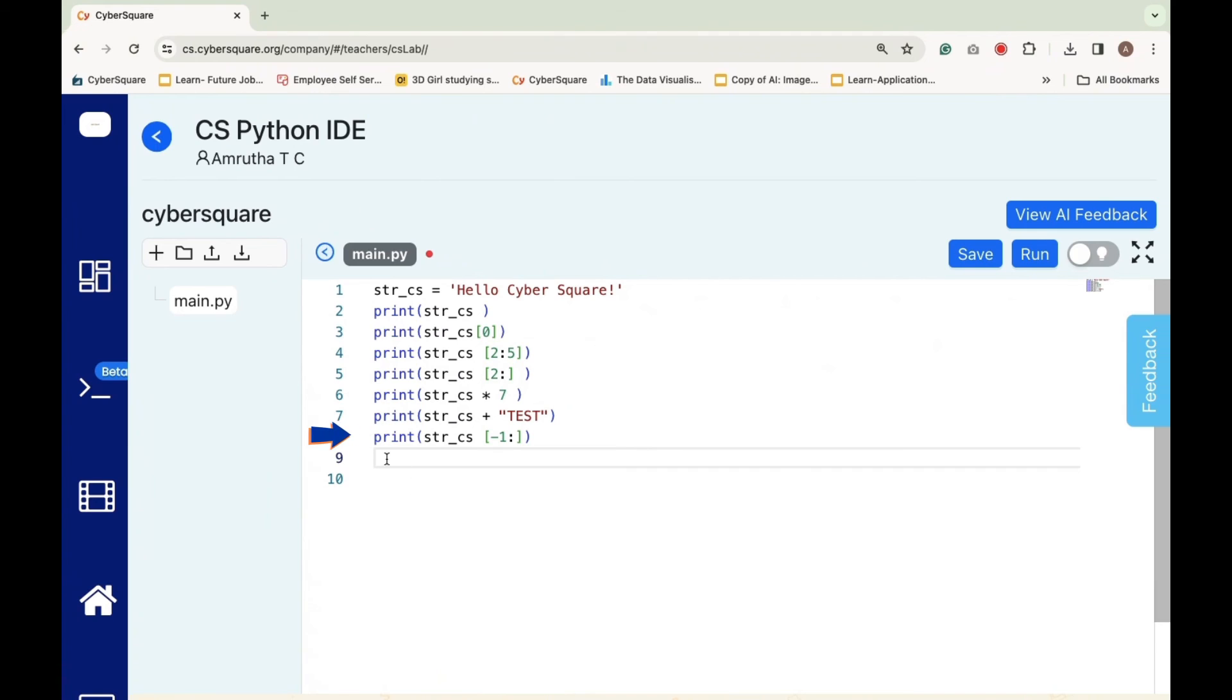istr_cs[-1:] will print the last character of the string istr_cs.